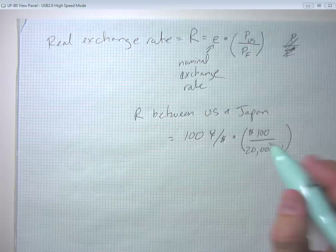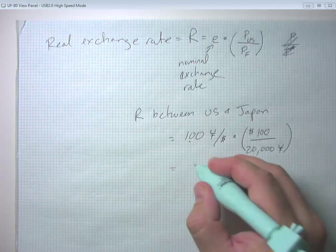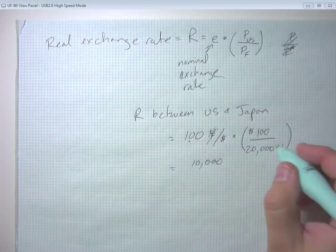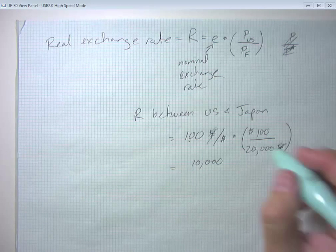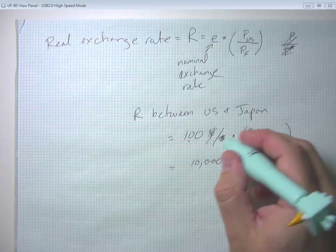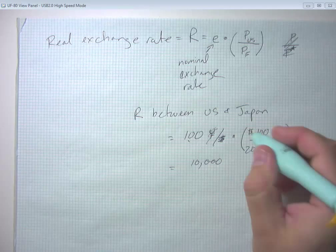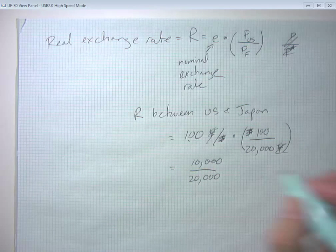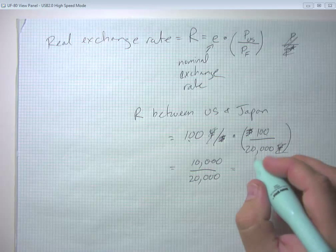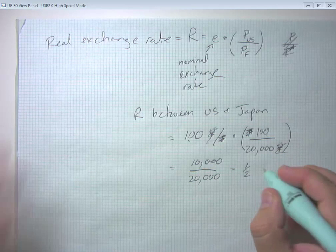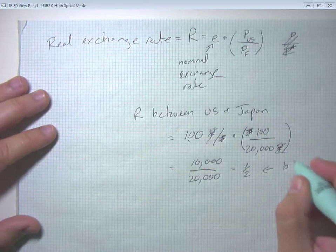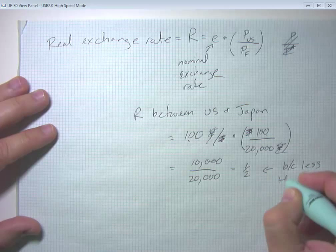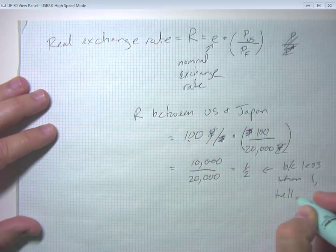And we'd get 100 times 100 on the top, which would be 10,000. And notice this yen symbol and that yen symbol would cancel out. This dollar symbol is on the bottom of the fraction. This one's on the top. So we get this kind of unitless measure here of 10,000 over 20,000 or one half. And that tells us, because it's less than one, it tells us that the US is cheaper.